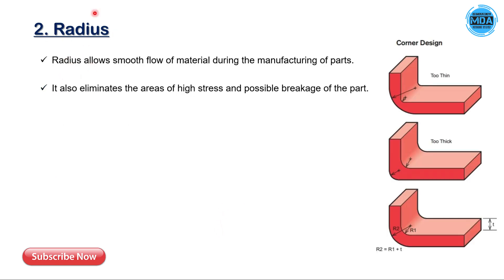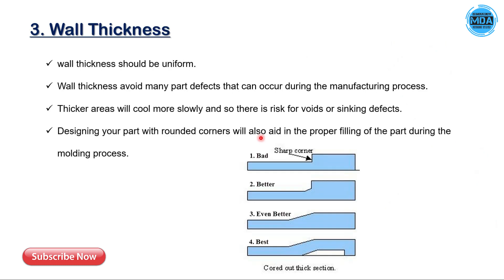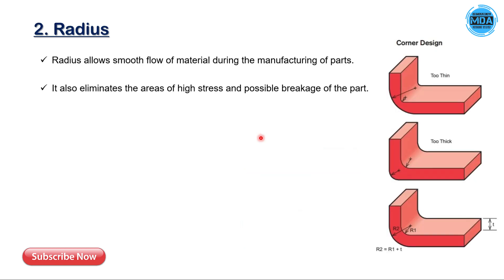Our next factor is radius. Radius is a very important factor because parts should always have radii at corners. The radius allows smooth flow of material during manufacturing — if smooth flow is present, the material will reach the corners and completely fill the cavity. It also eliminates areas of high stress and reduces the possibility of part breakage. The complete product must have rounded corners with proper radii.